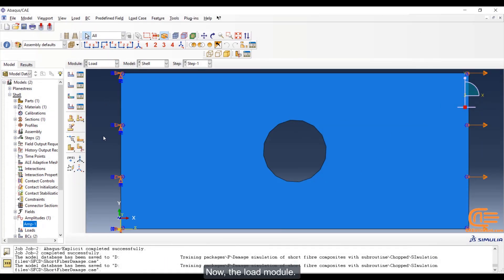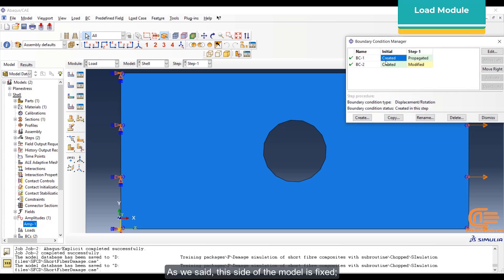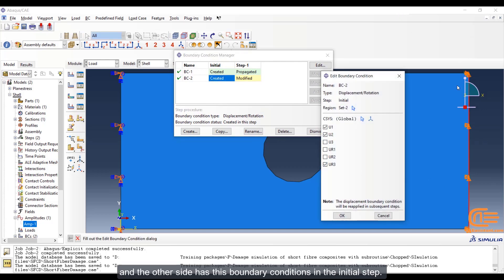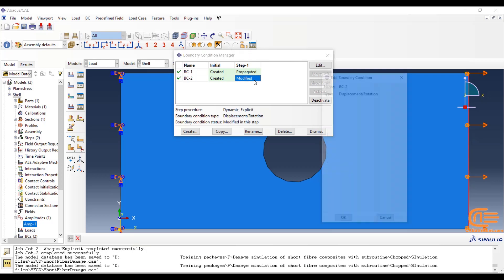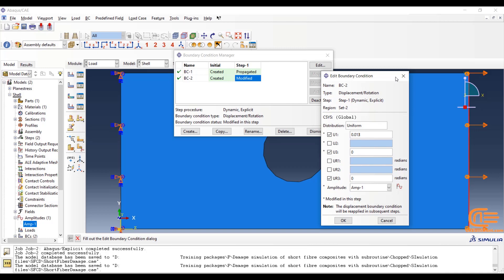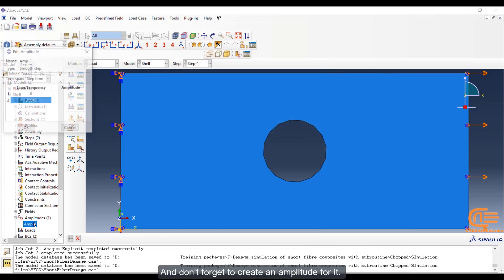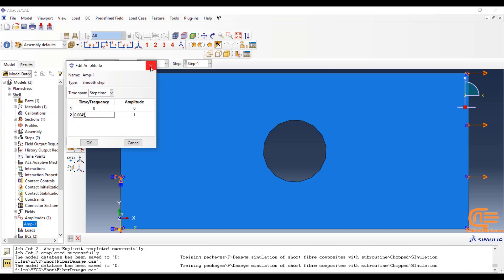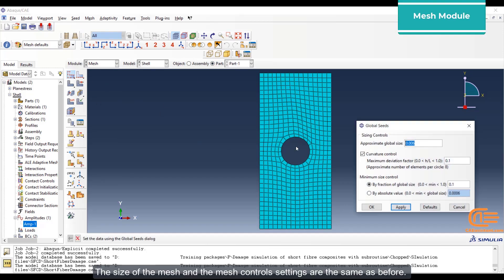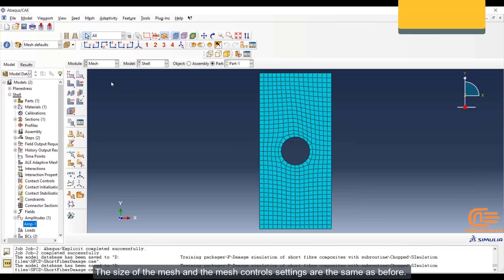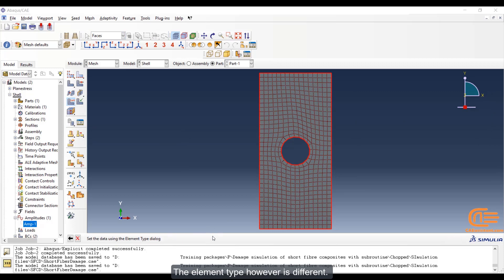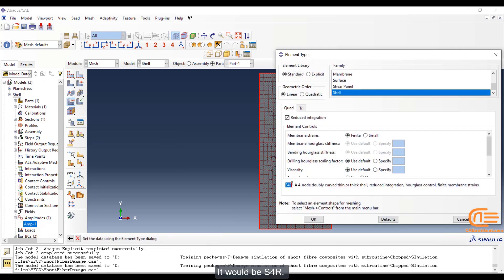Now the load module. As we said, this side of the model is fixed. And the other side has this boundary conditions in the initial step. After that, the displacement is applied according to what we saw in the slides. And don't forget to create an amplitude for it. The size of the mesh and the mesh control settings are the same as before. The element type, however, is different. It would be S4R.